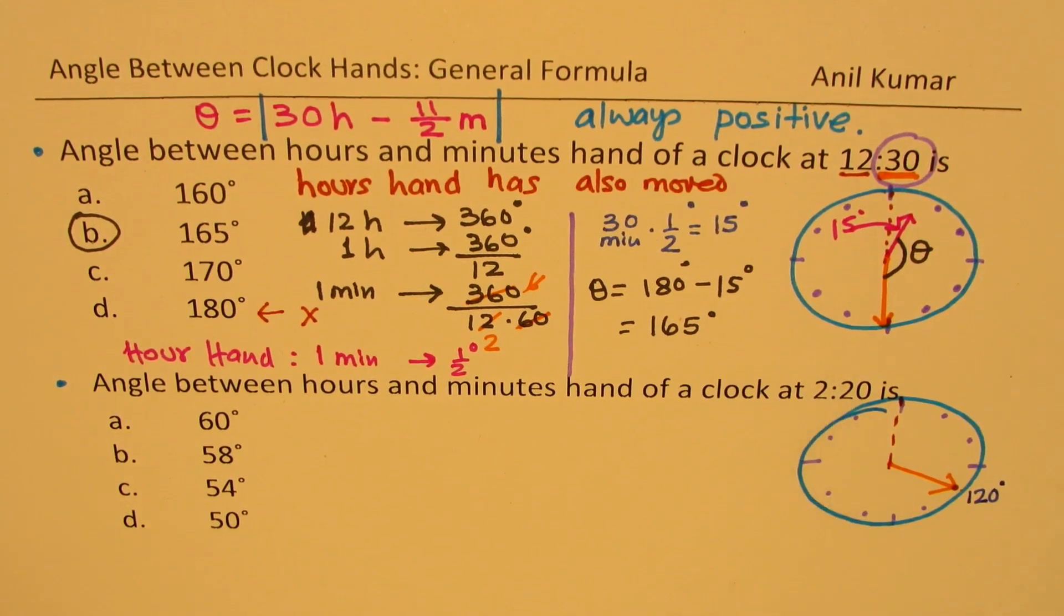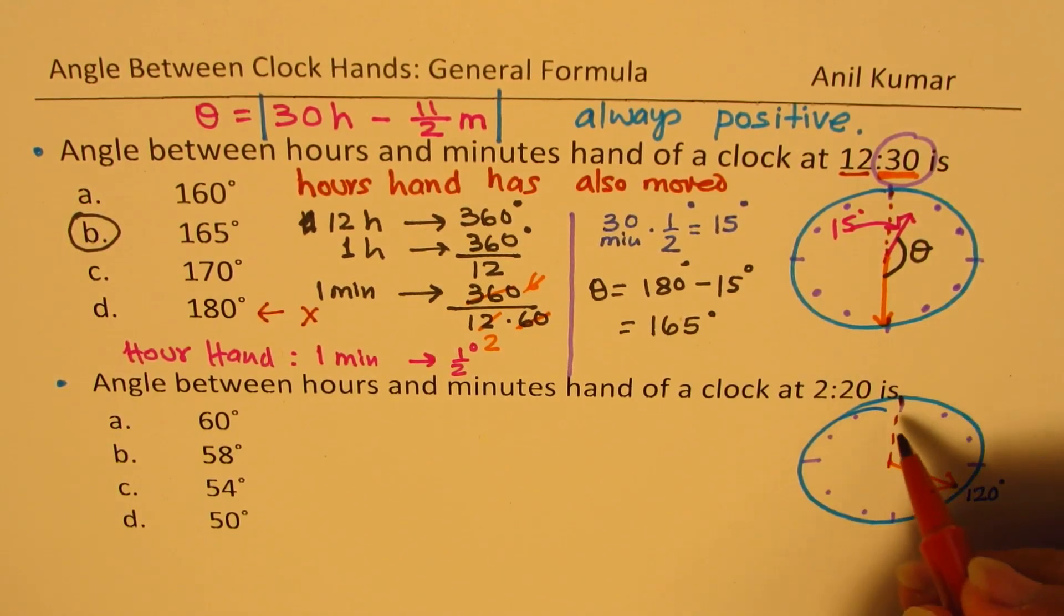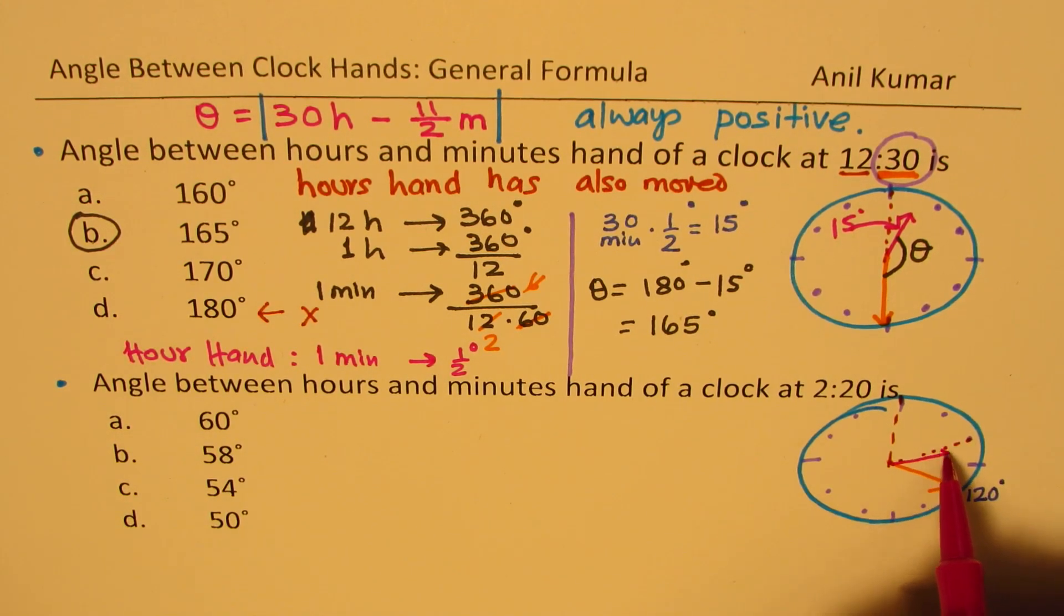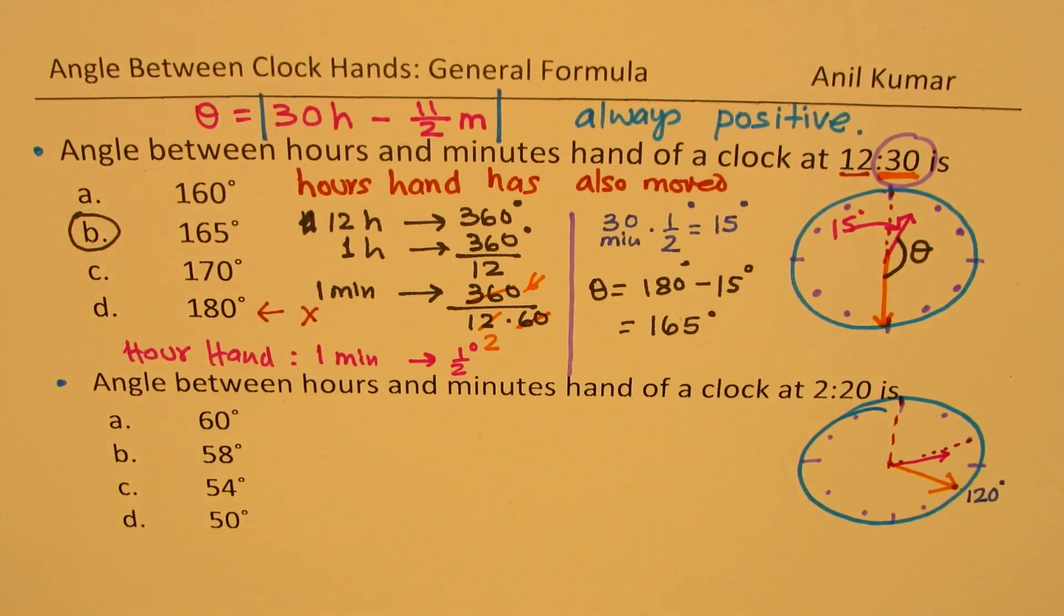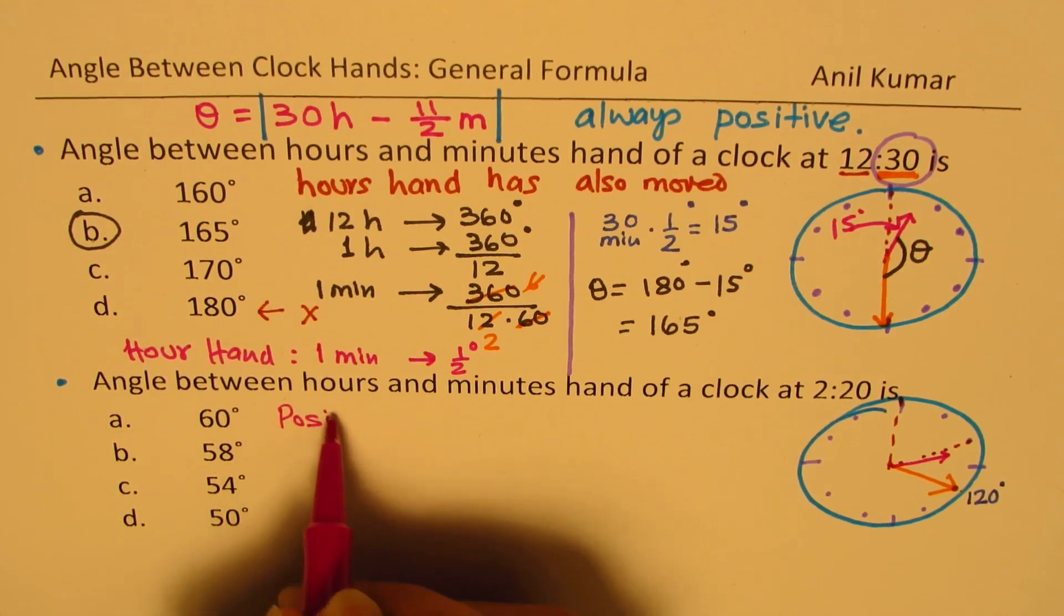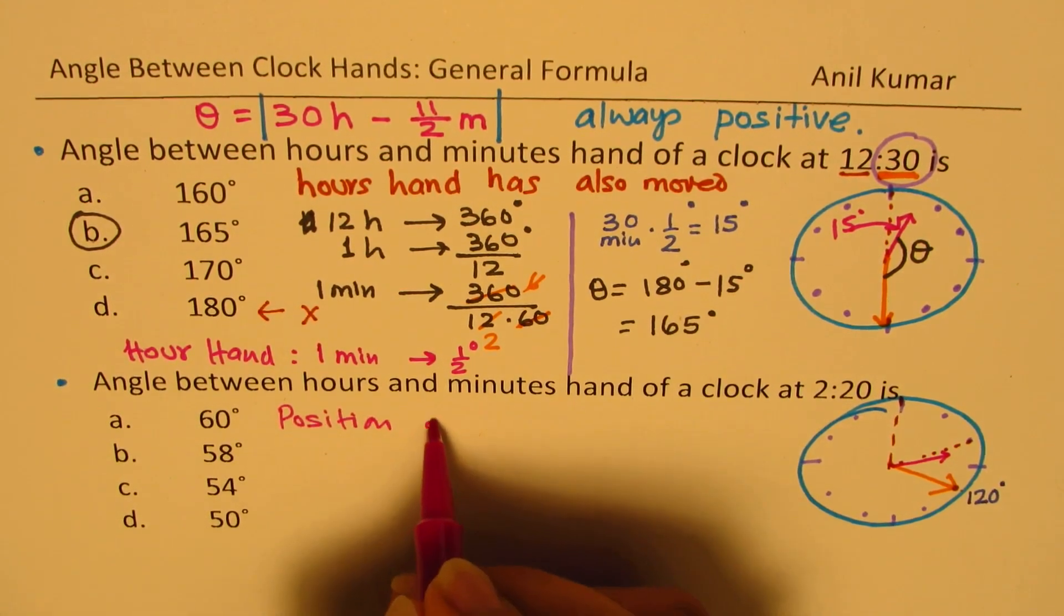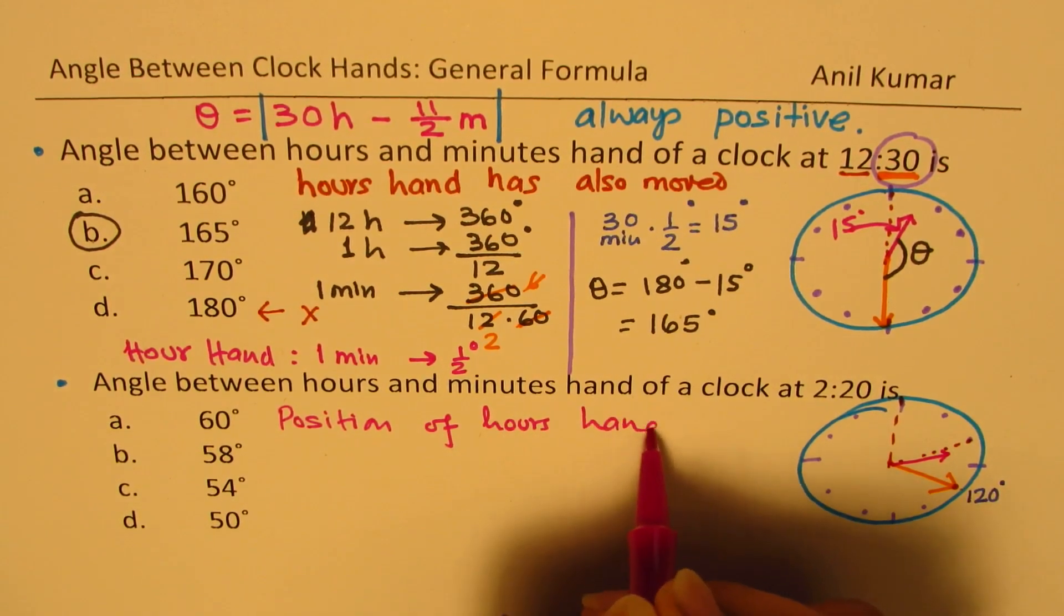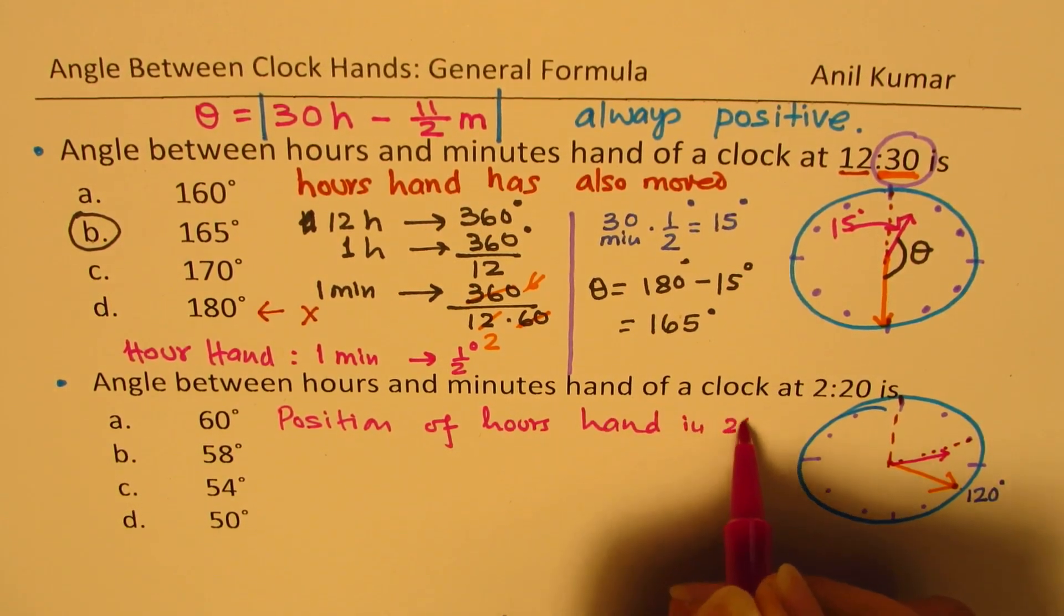Now, we are saying 2:20. That means the hour hand should have been at 1, 2, beyond 2. So this is your position. In 20 minutes, it will move somewhere. Somewhere here it will move. So we need to find how much it moved in 20 minutes. So we need to find position of hour hand in 20 minutes.